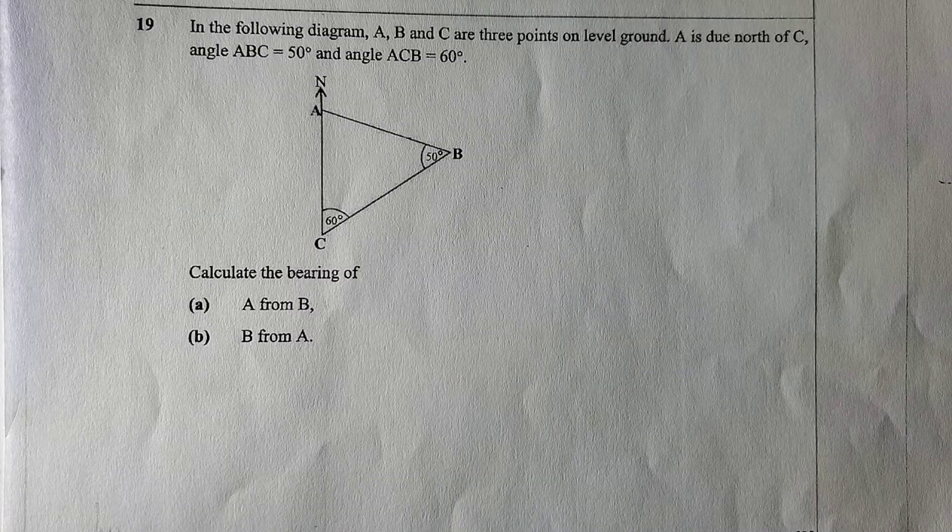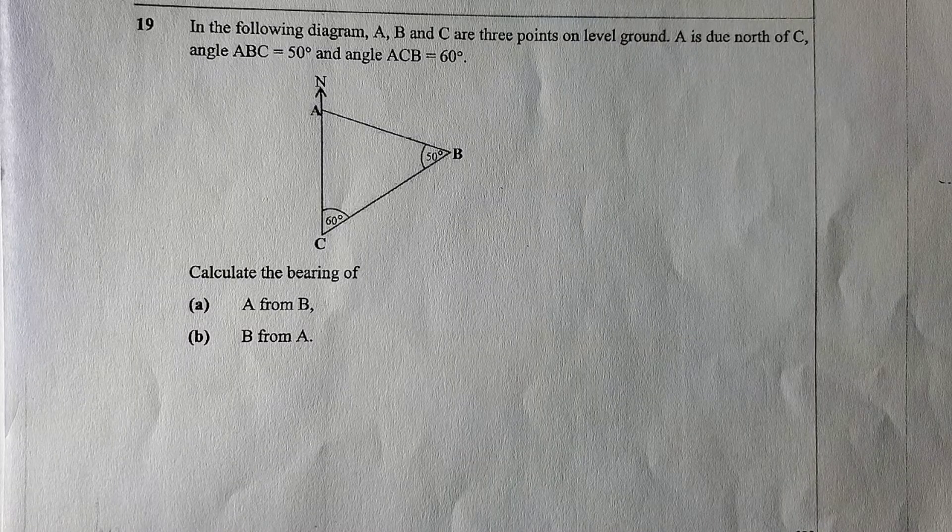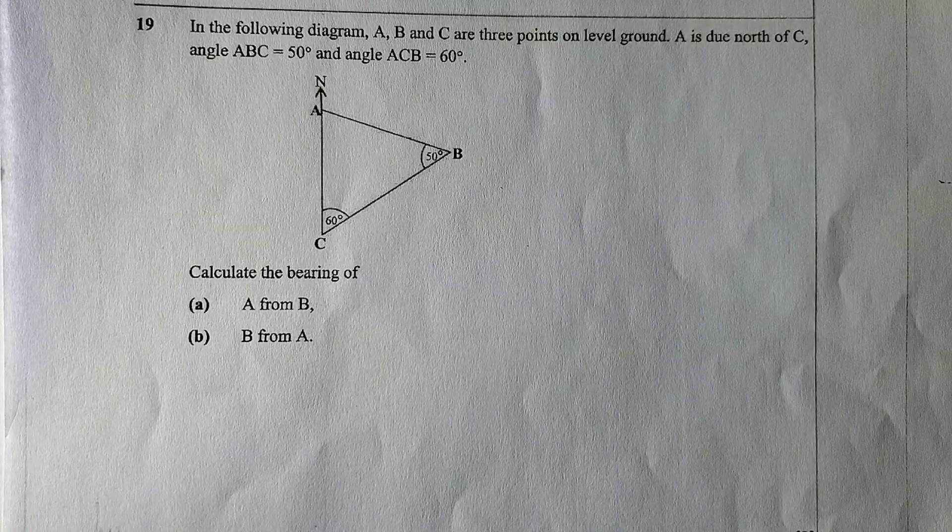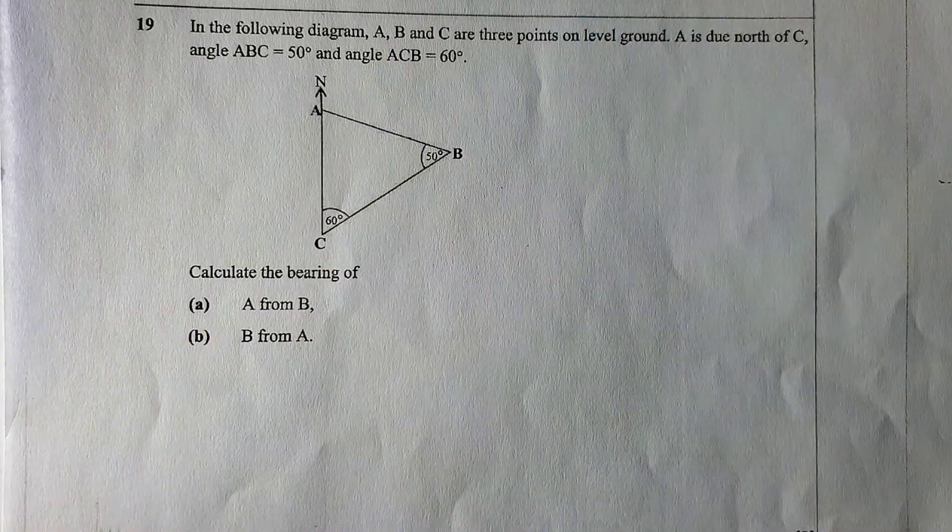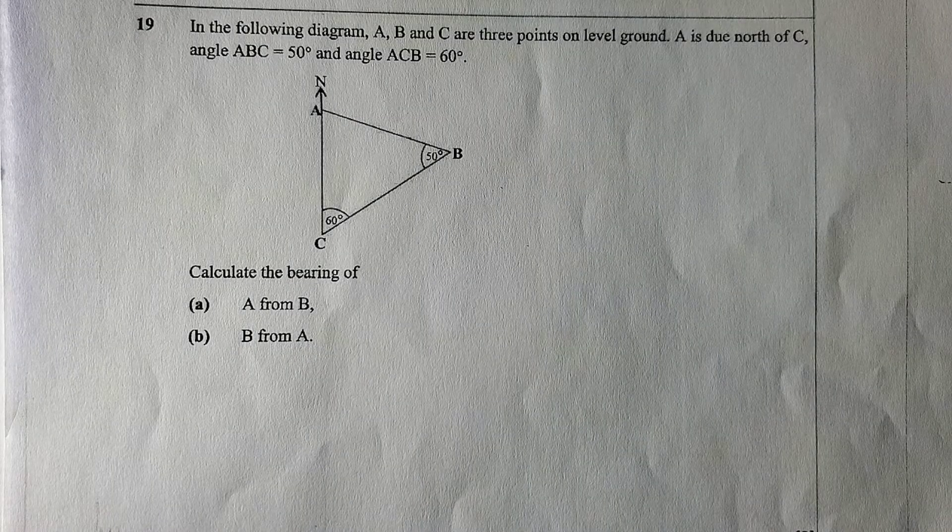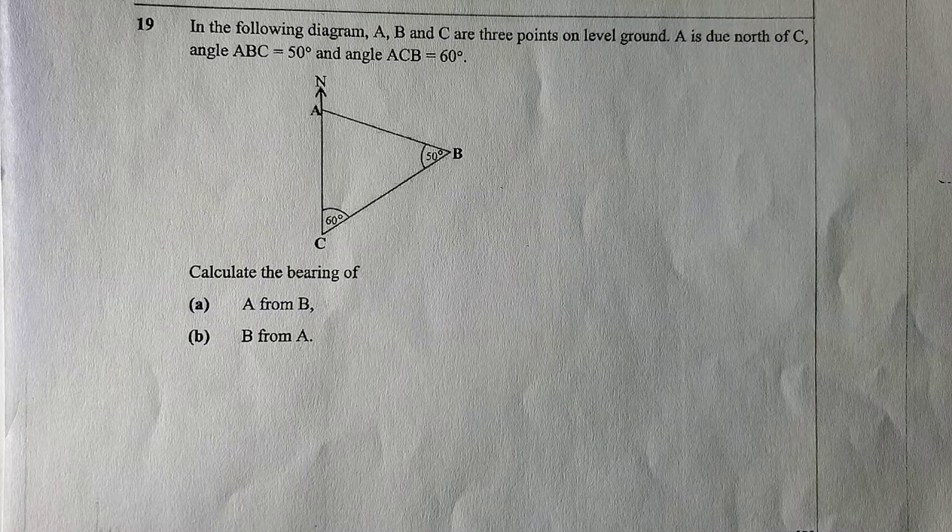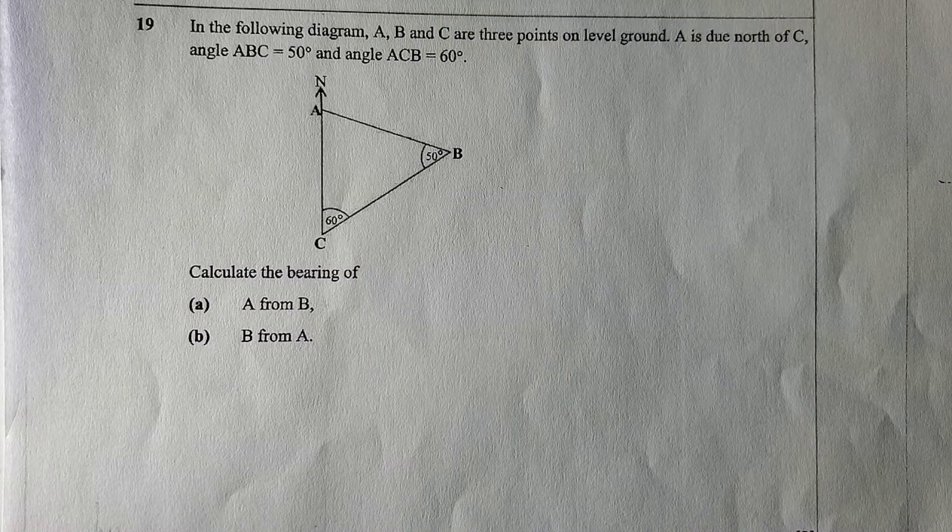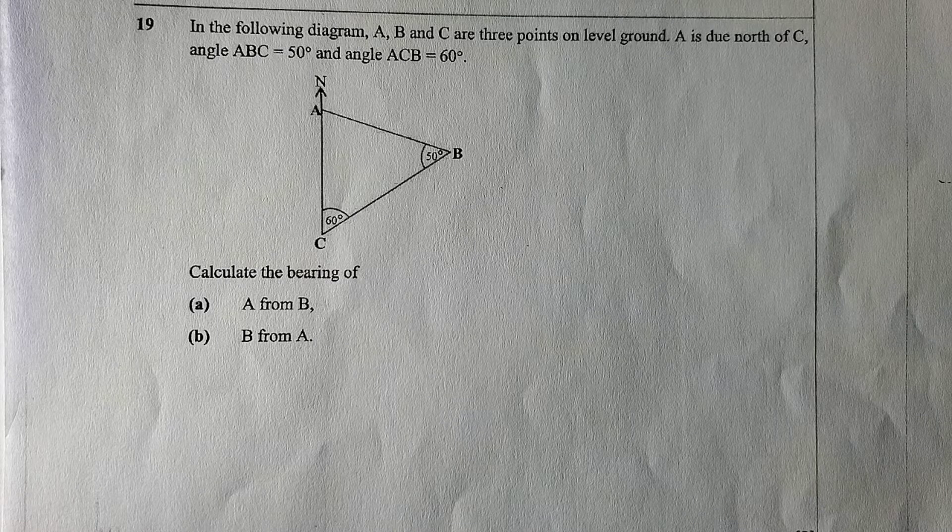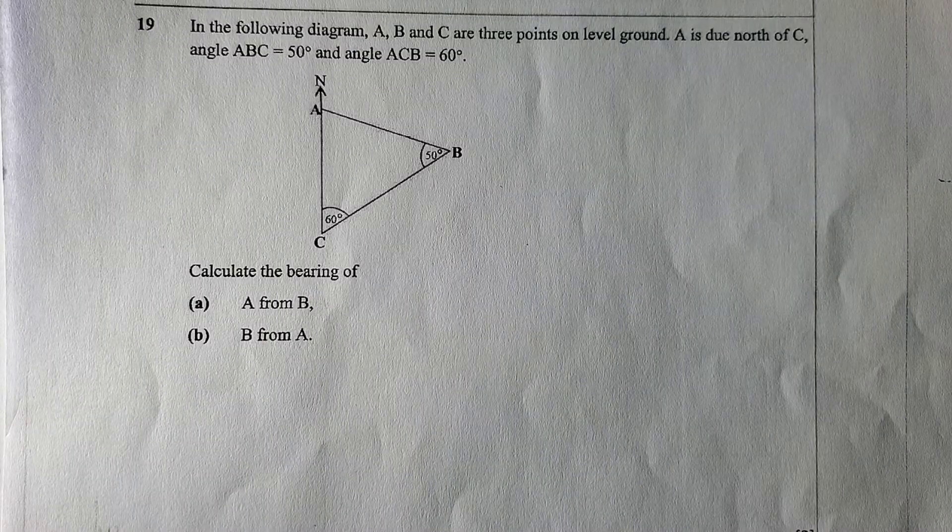Let's get started with this one. Question 19 reads: In the following diagram, A, B, and C are three points on level ground. A is due north of C, angle ABC is 50 degrees, and angle ACB is 60 degrees. As you can see here, these are bearings by the way.